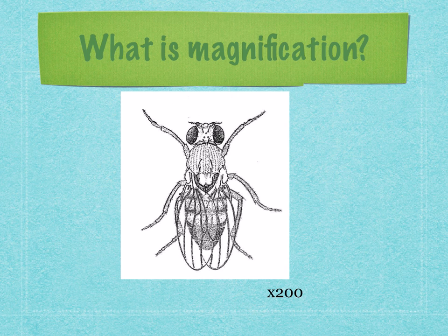So, what is magnification? Well, on this image you can see there's a times 200. This means that this image is 200 times bigger than the original fly.